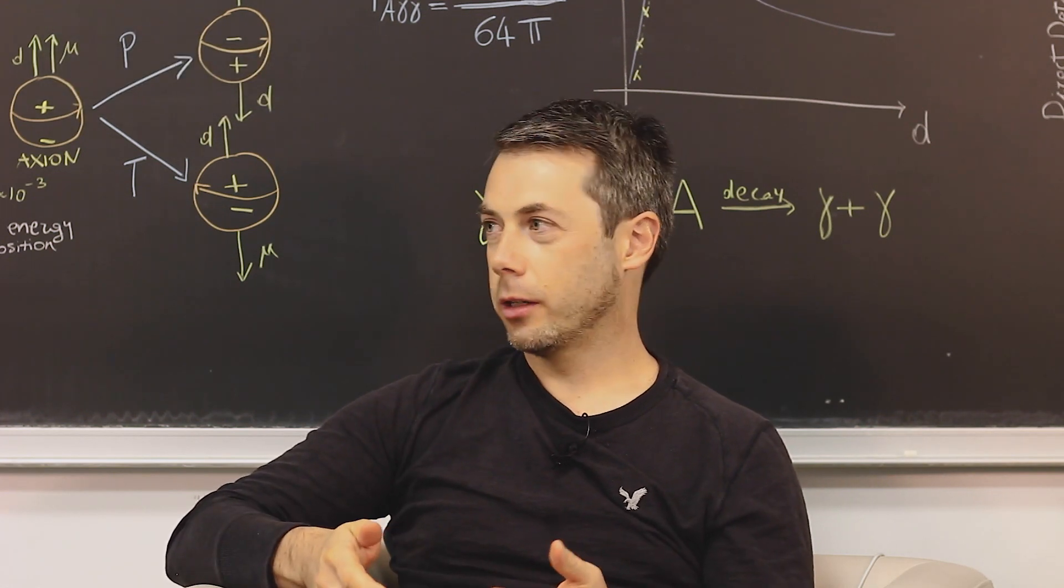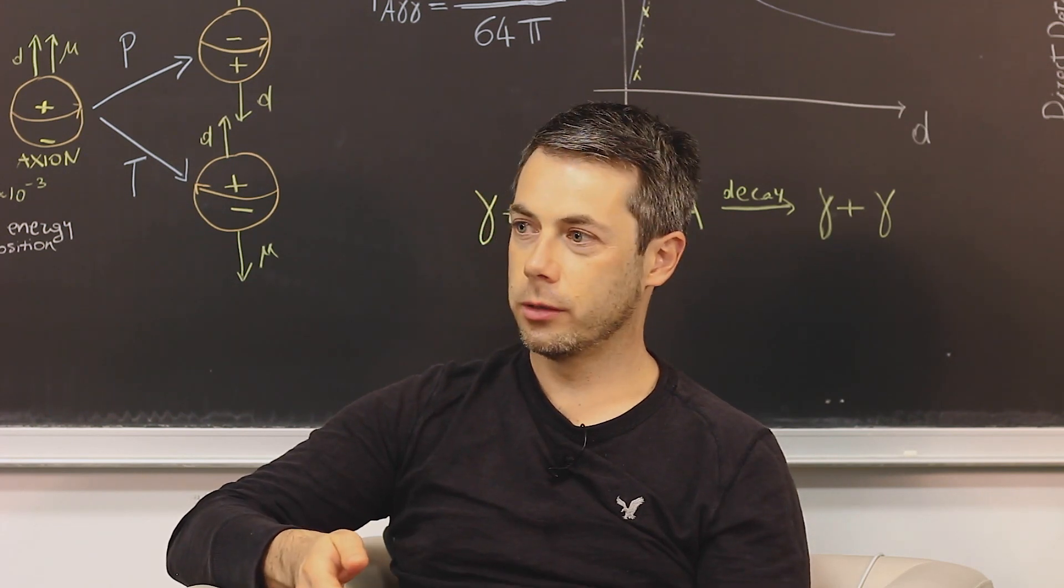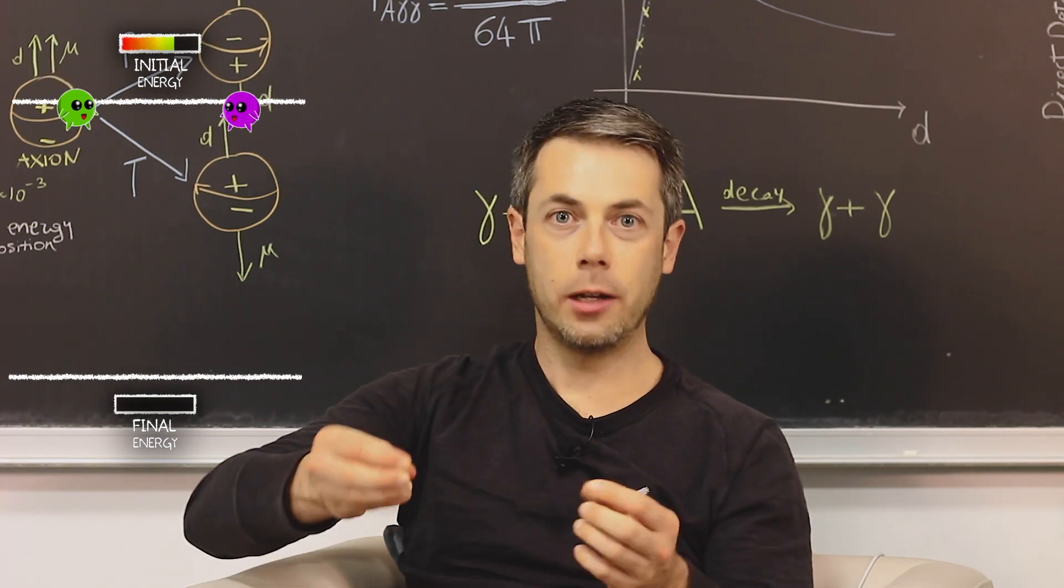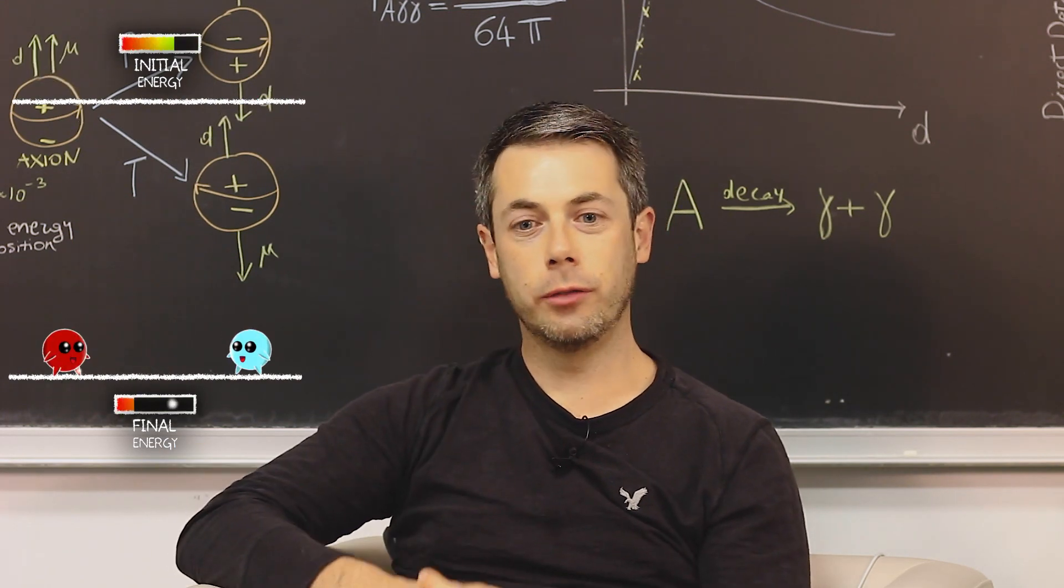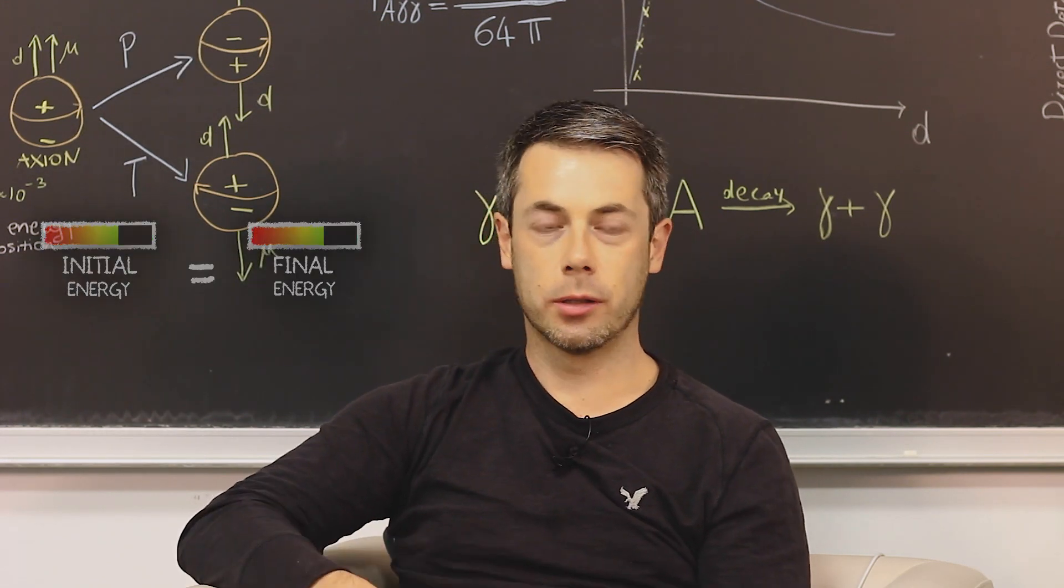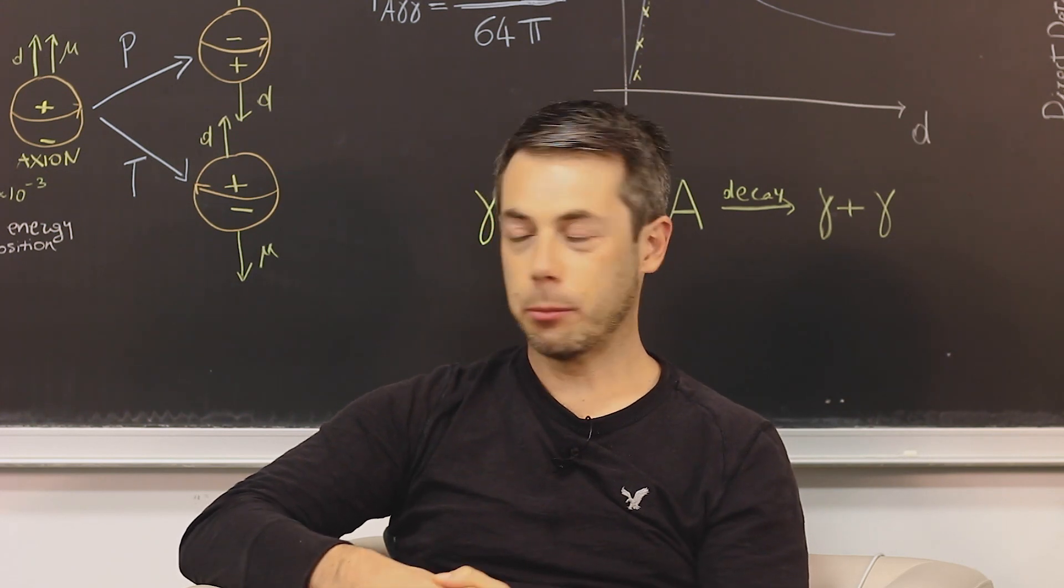There are some quantities that are always conserved in these collisions. And one of these quantities is the total energy. So we expect to measure the final energy and the initial energy of the collision to be the same, even if it is distributed amongst the different particles.